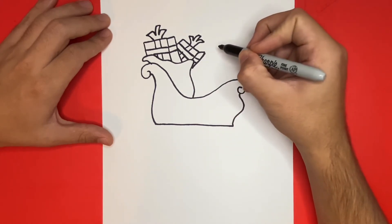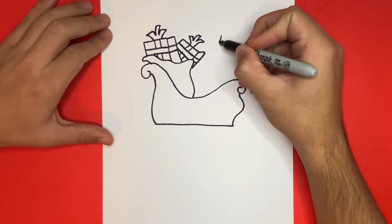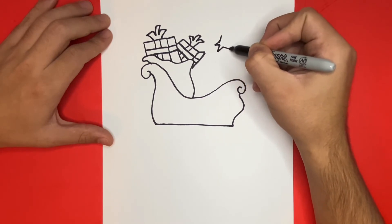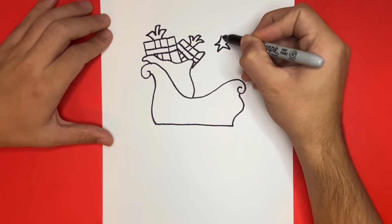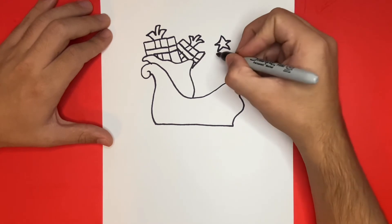Next we'll draw the tree by making a star at the very top then we'll make the tree right below. Now let's draw the outline of the tree by using squiggly lines that will connect down to the sleigh.